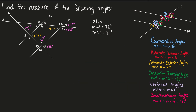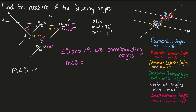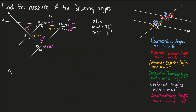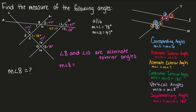Next, let's find the measure of angle 5. Angle 5 and angle 9 are corresponding angles. Corresponding angles are congruent, so angle 5 will be equal to angle 9, which is 47 degrees. Another way: angle 5 and angle 11 are alternate interior angles. Alternate interior angles are congruent, so angle 5 is equal to the value of angle 11, which is 47 degrees. Now let's find the value of angle 8. Angle 8 and angle 10 are alternate exterior angles. Alternate exterior angles are congruent, so angle 8 is equal to angle 10, which is 133 degrees.